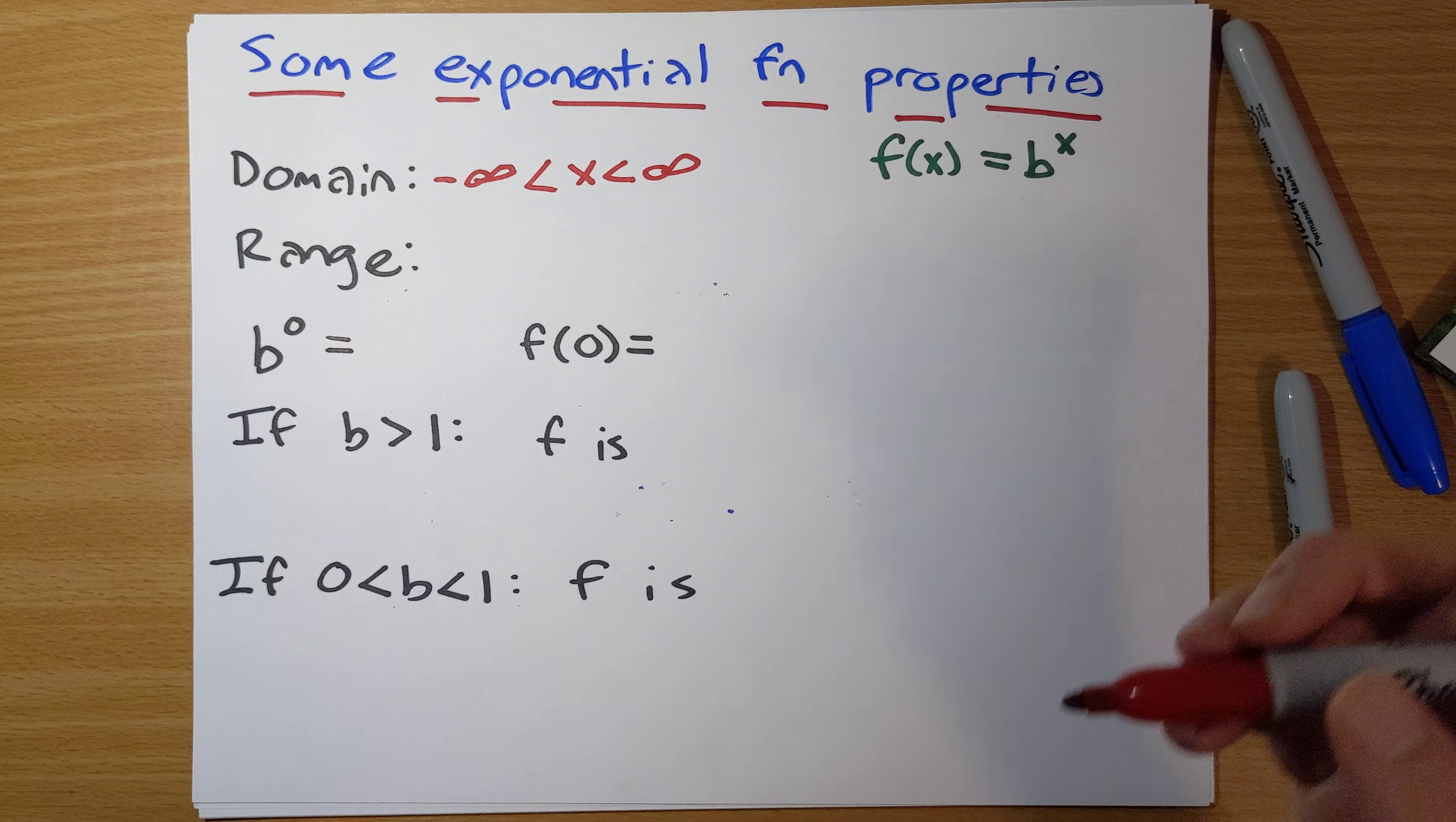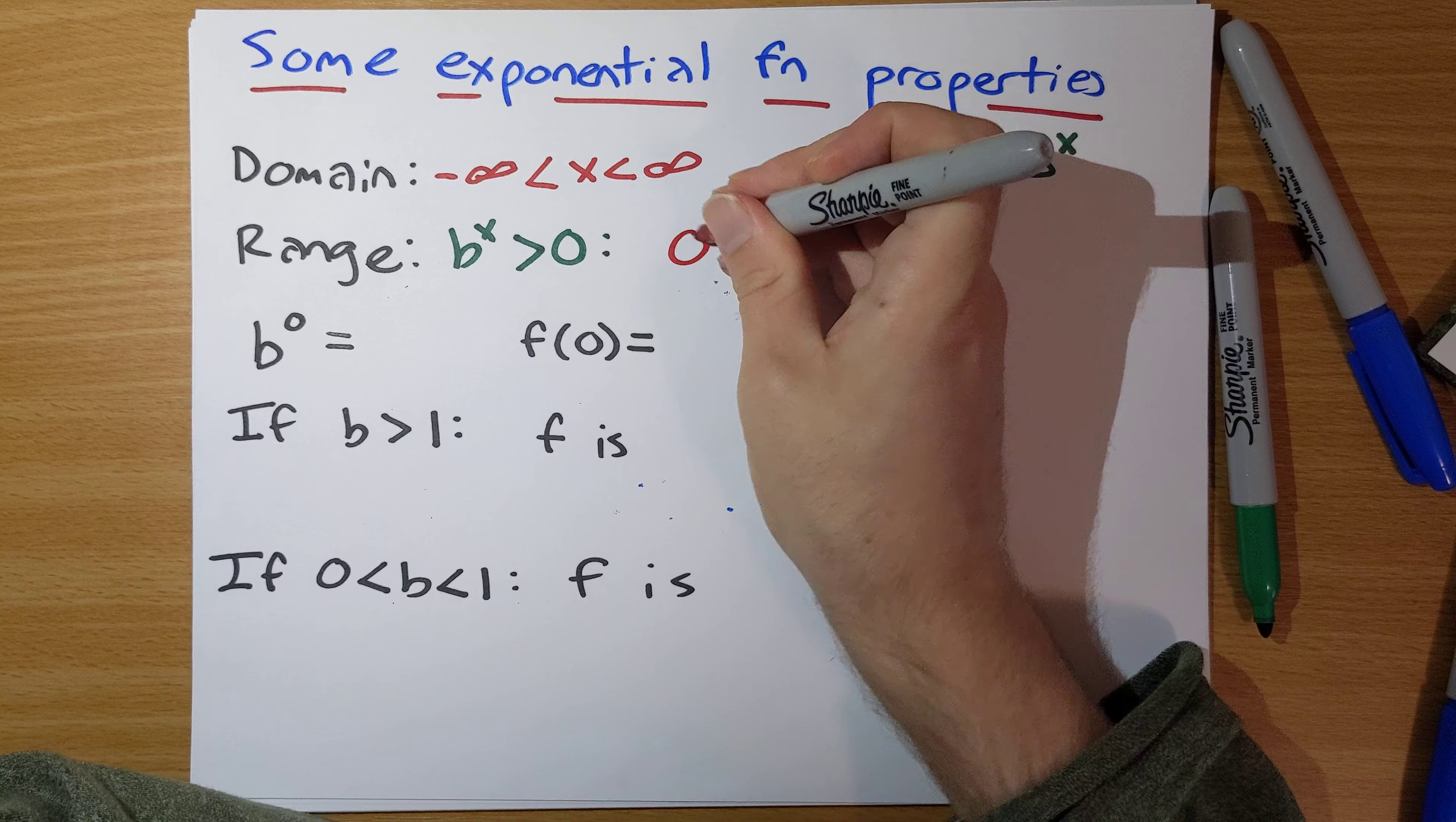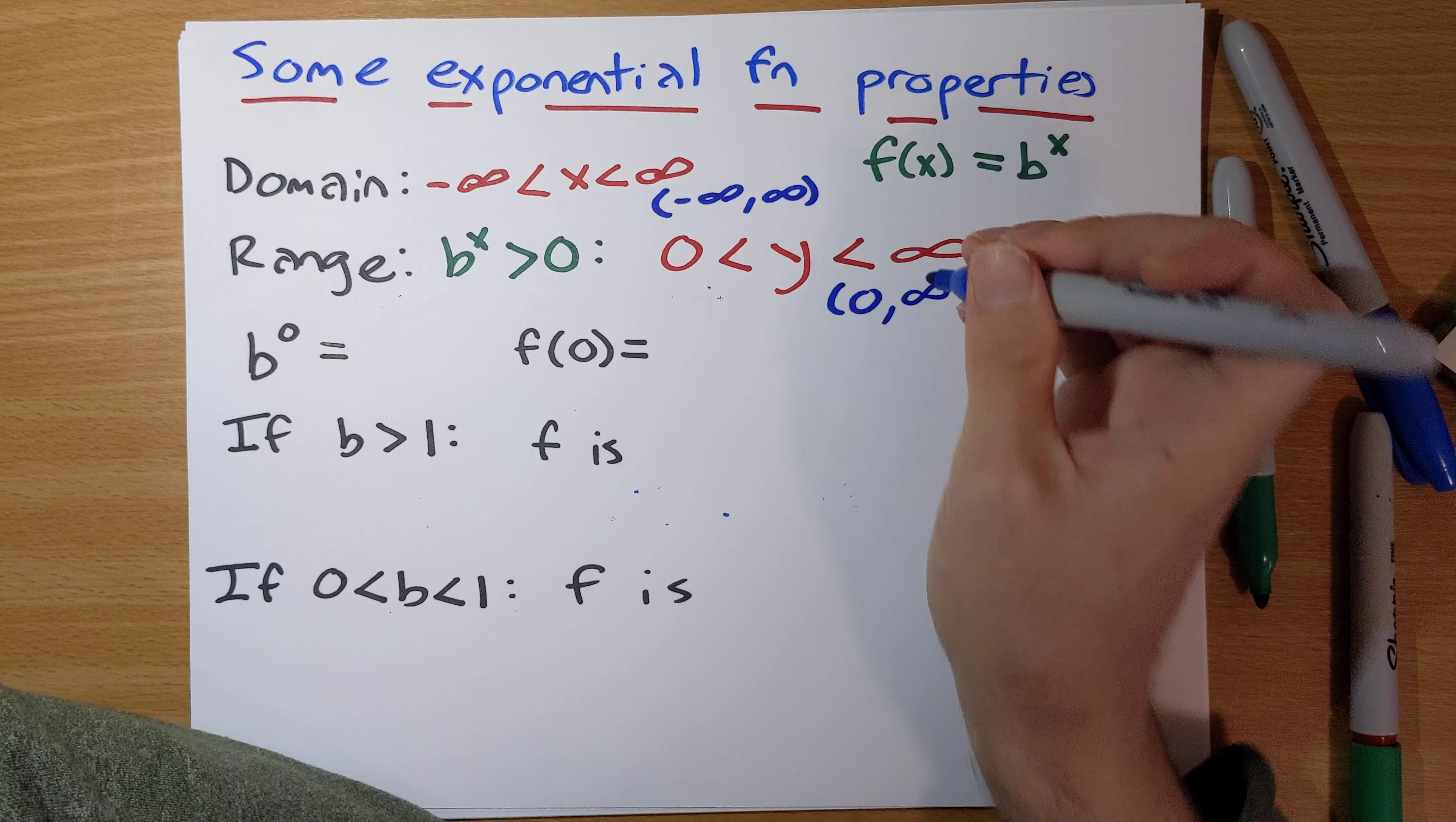The range here: b to the x is always going to be positive because we're assuming that b itself is positive, so raising a positive number to any power is still going to leave you something positive. So the range is actually going to be y has to be strictly bigger than 0, strictly positive, less than infinity. If you want to write these in interval notation, domain would be negative infinity to infinity, range would be 0 to infinity.